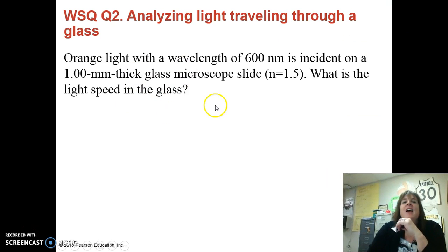Next question. I have orange light, which has a wavelength of about 600 nanometers. And it hits a piece of glass, which has a refractive index of 1.5. What is the speed of the light in the glass? See if you can figure that out. Put it in your WSQ form for question number two. And we'll check it in class. All right. See you in class.